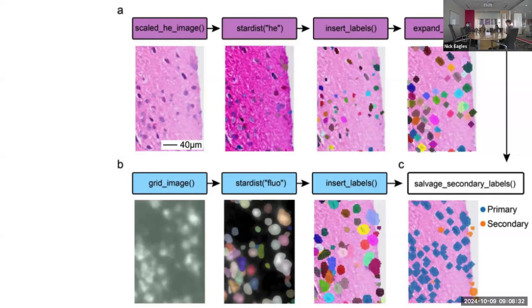Since we're only getting nuclei but really want cells, there's an expand labels step. They go into detail about how the settings were chosen. By default, it looks two bins around each nucleus — a two bin radius. So now we have cellular segmentations associated with individual bins. They also provide a secondary option that catches some cells missed by the primary method, described in panel B.